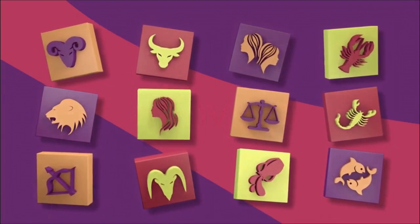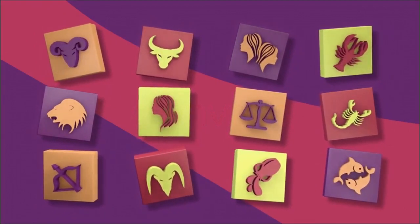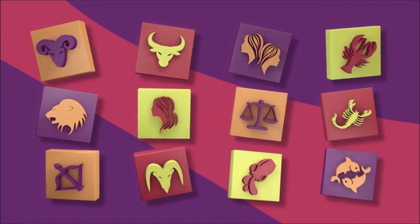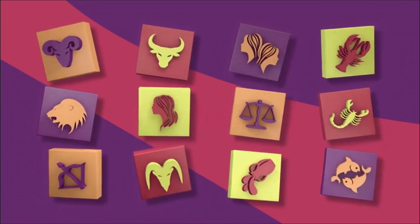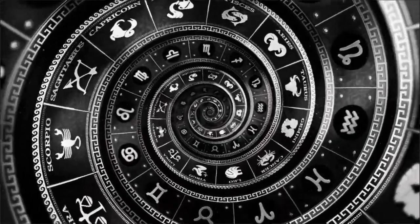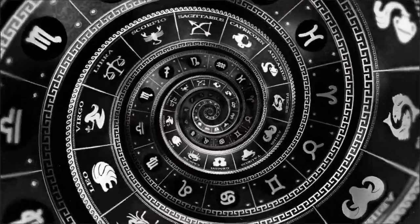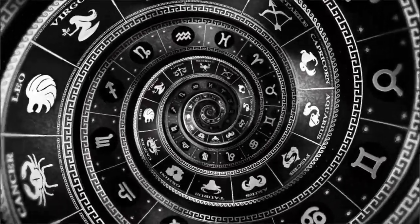October 24, waxing moon in Aquarius, from 11:33 in Pisces. The tenth lunar day continues in the morning. The eleventh lunar day begins at 16:25. The period of the moon without a course lasts until 11:33.